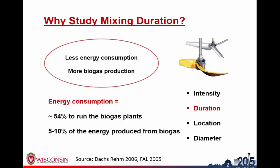One thing that is clear is we want to use less energy input but get more biogas production. A study has shown that of the total energy used to operate a biogas plant, 54% is put into the mixing system. About 5 to 10% of the energy generated from biogas will be put into mixing — that's a lot of energy.